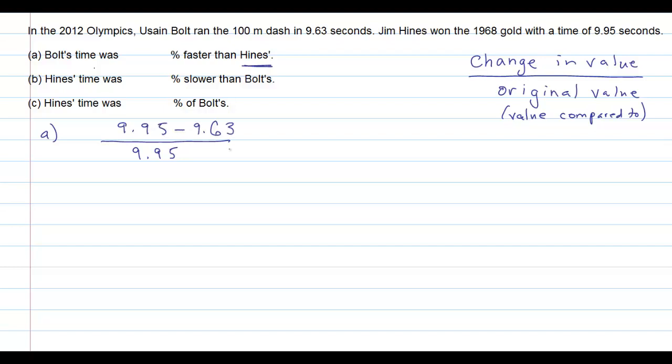So my numerator will be 9.95 minus 9.63, which gives us this fraction and that as a decimal. Now I need this in terms of a percent, so that means I need to move the decimal place over twice to the right. And since I need to round to two decimal places after I've converted to a percent, I'll look at the tens place. I see the number to the right of that is five or greater, so that means my final answer will be 3.22 percent.